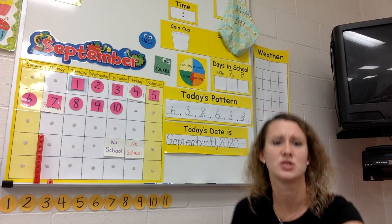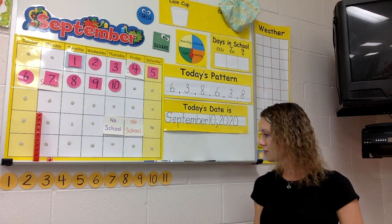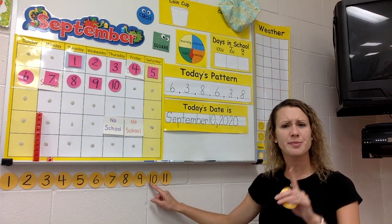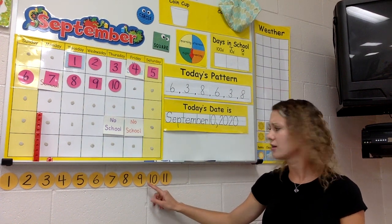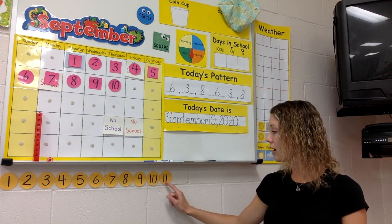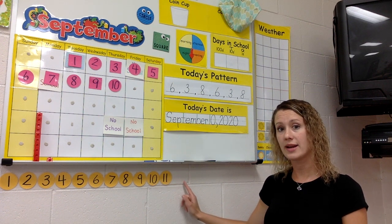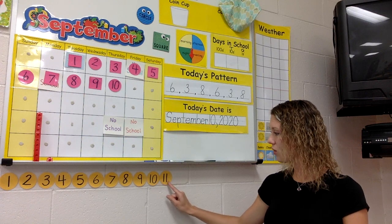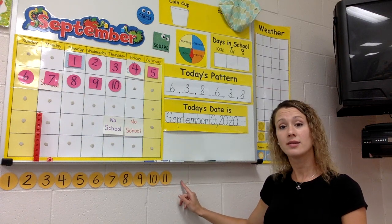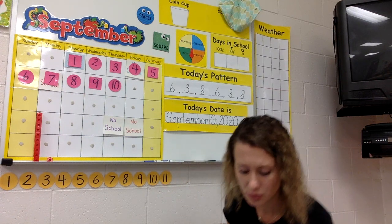Twelve! What does a 12 look like? Do you know? Look, there's a pattern — a one and a zero, a one and a one, a one and a zero... one, two — a one and a two.